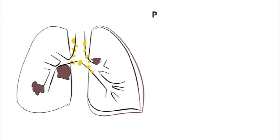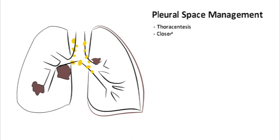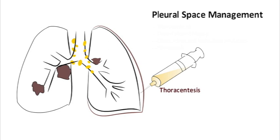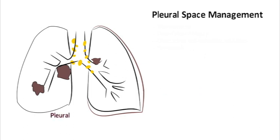Interventional pulmonologists also commonly diagnose and manage pleural disorders. Techniques include thoracentesis, closed pleural biopsy, and pleuroscopy, also called medical thoracoscopy. Thoracentesis is the mainstay for diagnosing pleural effusions. It involves introducing a needle or small catheter into the pleural space and draining fluid which can be sent to the lab. Thoracentesis is also useful for draining large volume pleural effusions for palliation of dyspnea. Closed pleural biopsy can provide large pieces of tissue for evaluation, but is limited due to a lack of imaging guidance.